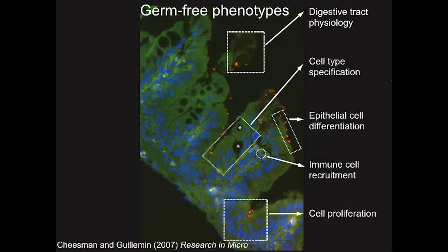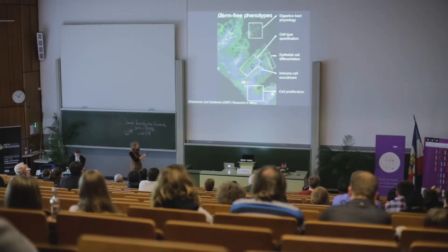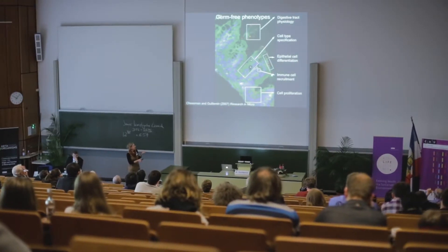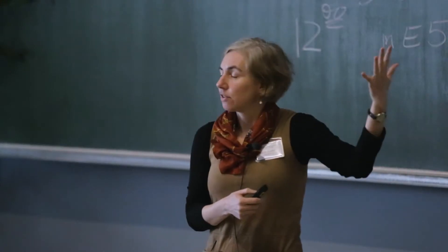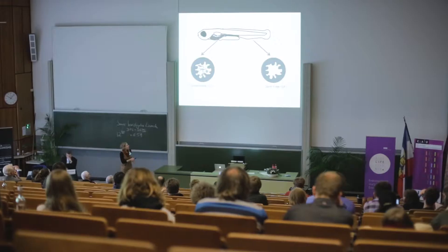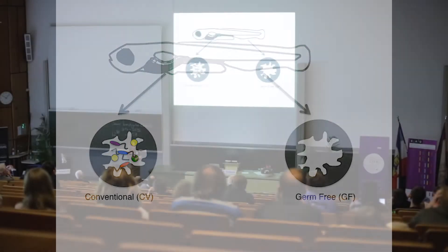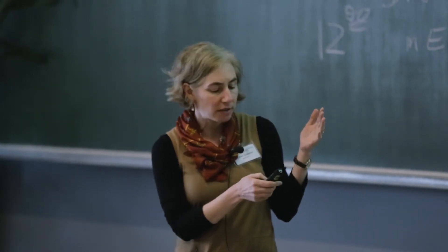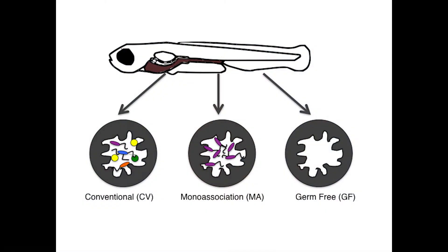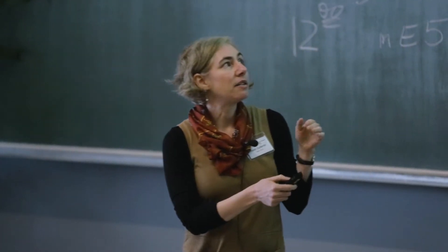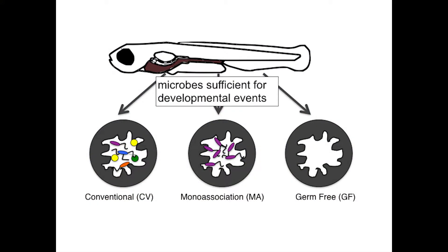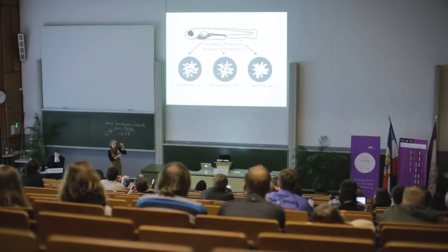Those kinds of studies have allowed us to make inferences about certain conserved responses of vertebrates to their microbiota, based on germ-free phenotypes of both zebrafish and mice. There are requirements for the microbiota in normal digestive tract physiology, cell type specification, epithelial differentiation, immune cell recruitment, and cell proliferation within the digestive tract. Another important thing we can do is take this germ-free state and add back particular microbes or microbial products — for example, performing a mono-association with a normal resident of that community — and if we can reverse a germ-free phenotype, we can infer that that particular microbe is sufficient to perform that developmental function.